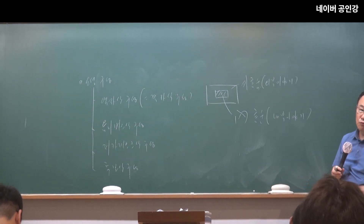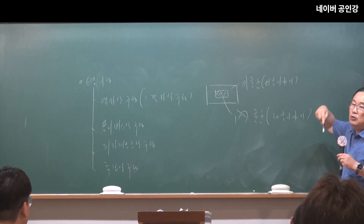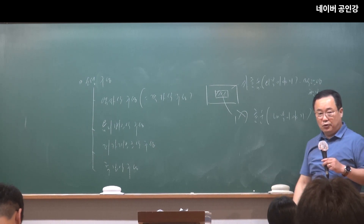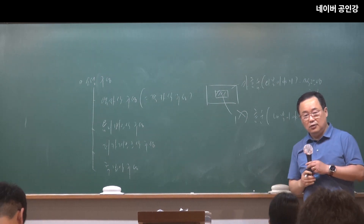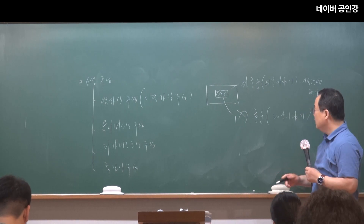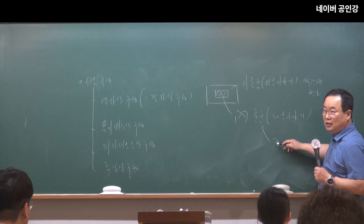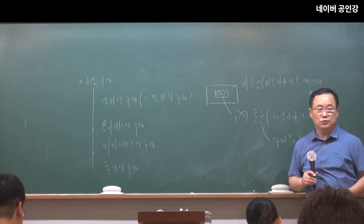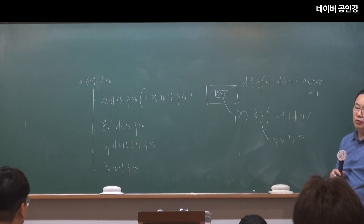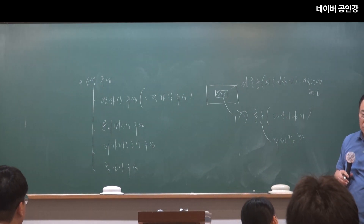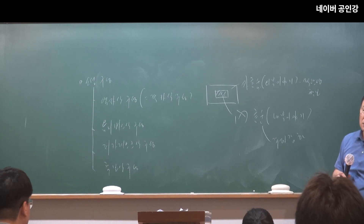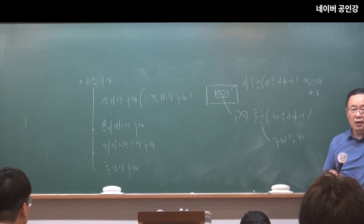외부 이야기를 설정하는 이유는 내가 말하고자 하는 이야기에 대한 객관성을 확보하기 위해서입니다. 본격적으로 이 소설을 통해서 이야기하고자 하는 것은 내화에 담겨 있습니다. 내화는 주제를 강화시키는 역할을 합니다. 주제는 하나이며 내화 속에 담겨 있고, 외화는 그 내화를 잘 전달하기 위한 포장 역할을 합니다. 내가 지어낸 내용이 아니야, 어디서 본 내용이야 라고 하는 것입니다.